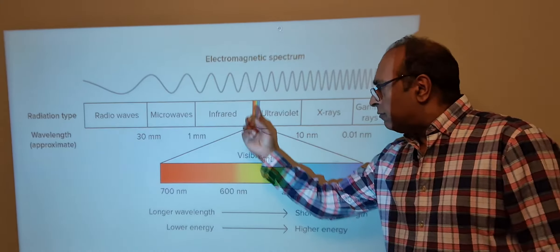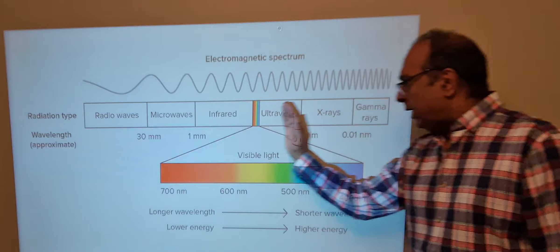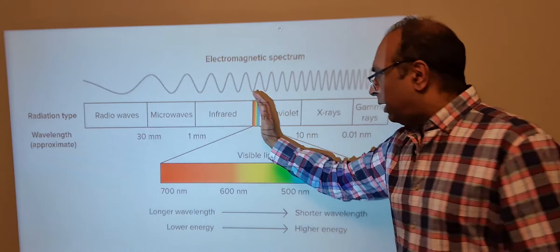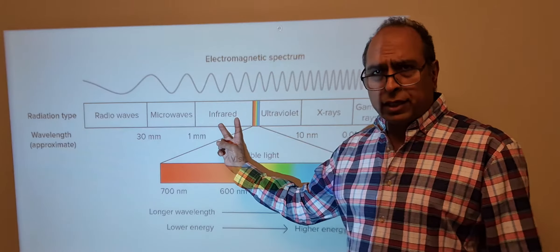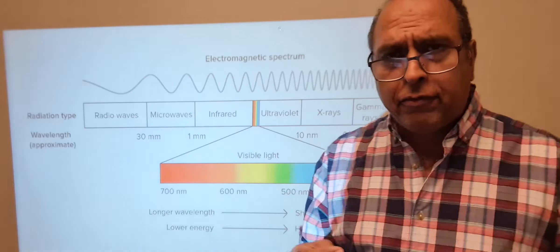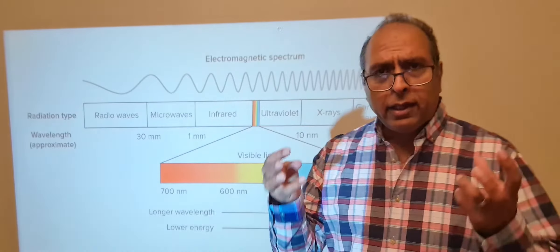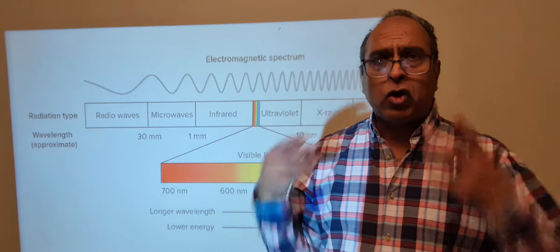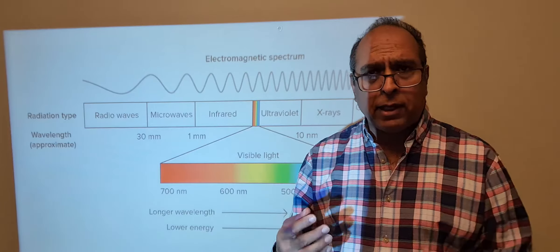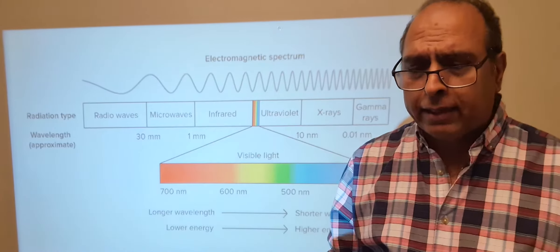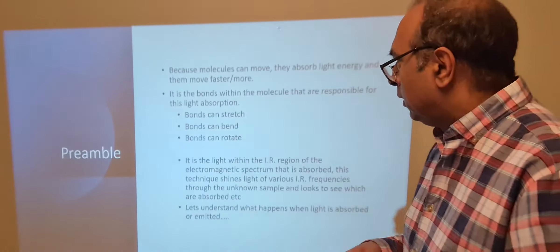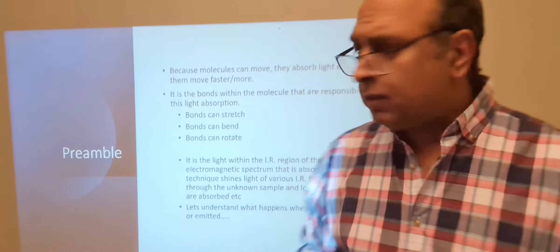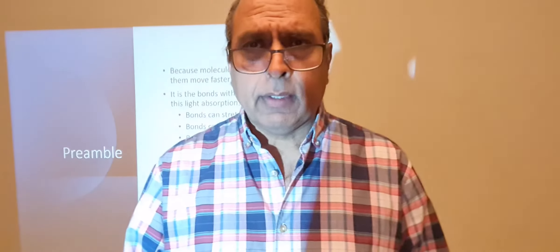So in the visible region we have higher and lower energy, higher and lower frequencies. In this section we look at infrared light, and we use a spectrometer to shine it through compounds in order to give us some information about the structure of that compound.